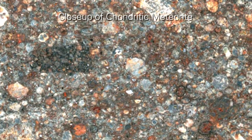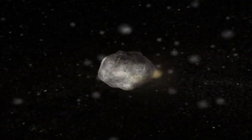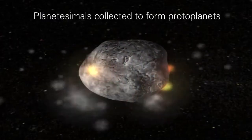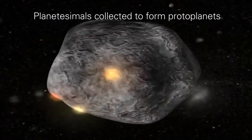As more time passed, one planetesimal got big enough so that it started to attract most of the matter in its orbit. Once the object became several hundred to a thousand kilometers in diameter, it could be called a proto-planet.